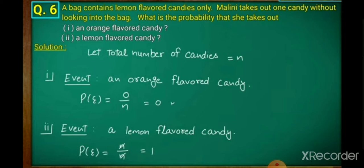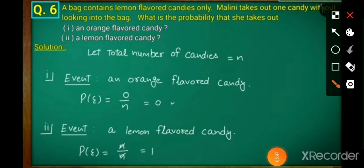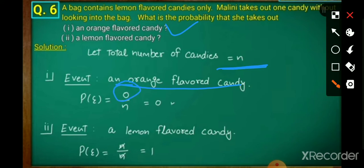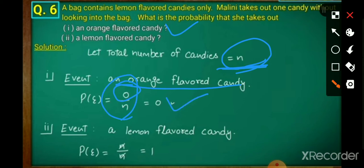So let the total number of candies be N, because we don't know the exact total. For the first event — an orange flavored candy — P(E) = 0/N = 0, because the bag contains only lemon flavored candies, so there are zero favorable outcomes for orange. This is an impossible event, and the probability of an impossible event is 0.